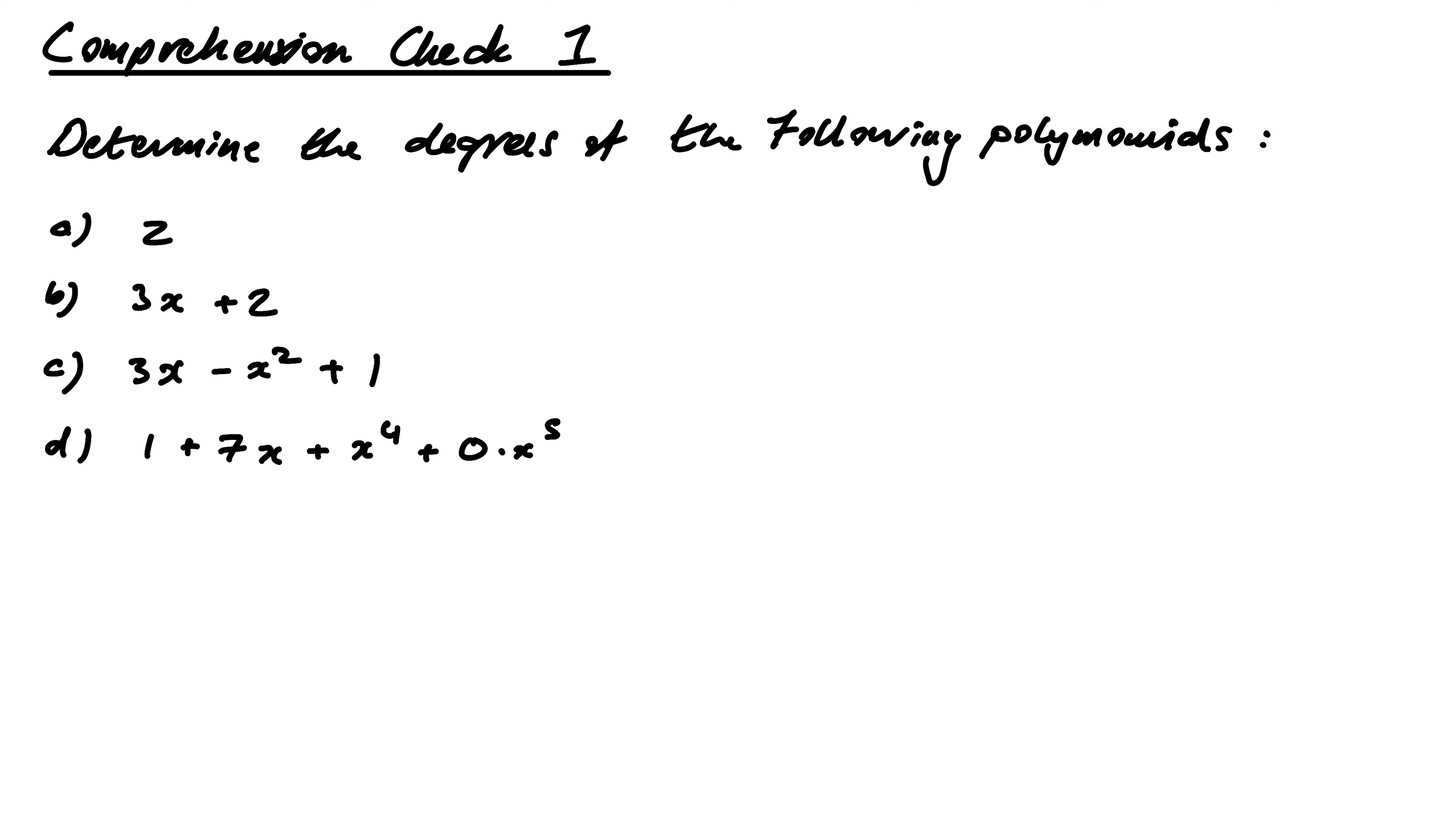So first of all, this guy here, what's the degree of this? Well, there are no powers of x, so really the power of x is x to the power of 0, which is just 1. So this would be just 2 times x to the 0. So this is degree 0.